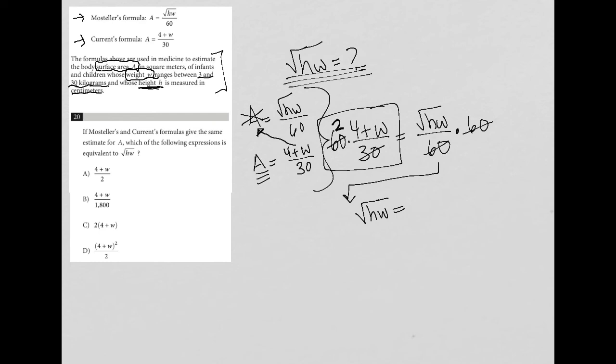So just a little cross cancellation. So I'm going to have 2 times 4 plus W. Don't forget, this 2 here applies to the entire numerator. So that's why I'm putting it in parentheses. It's not just 2 times 4 and then plus W. It's going to be 2 times the entire numerator there.